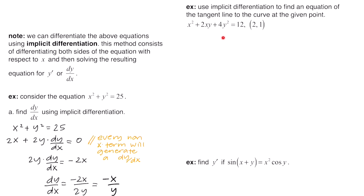This example says: use implicit differentiation to find an equation of the tangent line to the curve at the given point (2, 1). We start by taking the derivative implicitly with respect to x. The derivative of x squared is 2x. For the next term, because we have a product 2x times y, we use the product rule. The derivative of 2x is 2, and the derivative of y is 1 times dy/dx — because this is a non-x term. So even when doing the product rule, you still abide by the implicit differentiation rule.